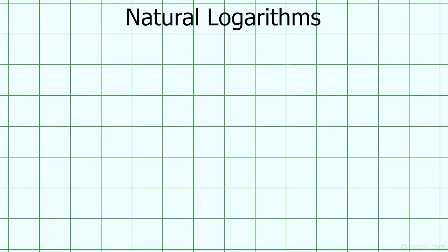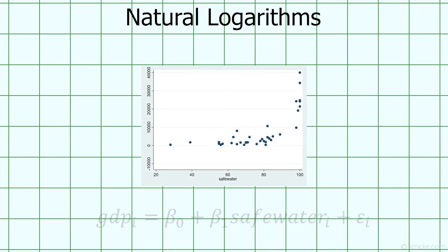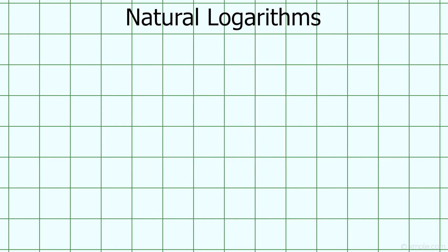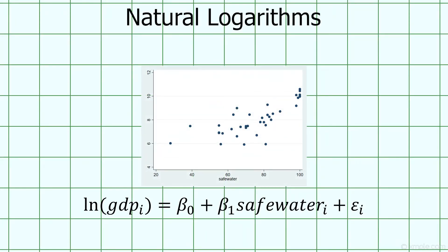These log transformations are likely the most popular type of variable transformation that economists use. To see how useful log transformations can be, take a look at this scatterplot and regression line from our drinking water dataset. It's pretty clear that this regression doesn't do a great job of modeling the true relationship between safe water and GDP, which seems to be more exponential. Now, let's instead use the natural log of GDP as our dependent variable. The scatterplot now shows a linear relationship, and our regression line seems to fit the data much better.